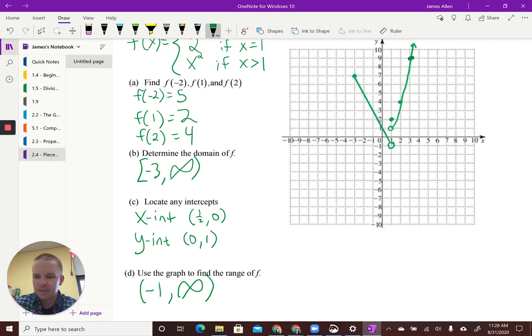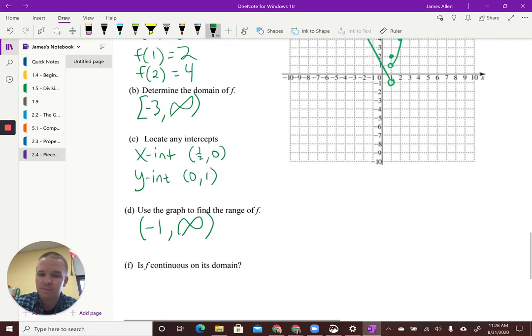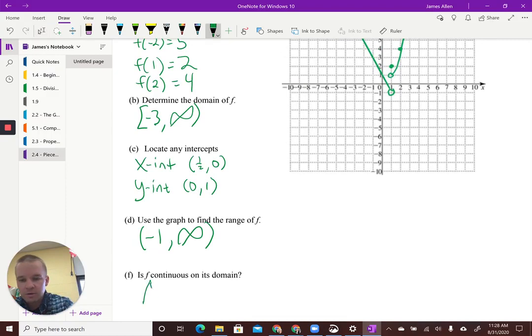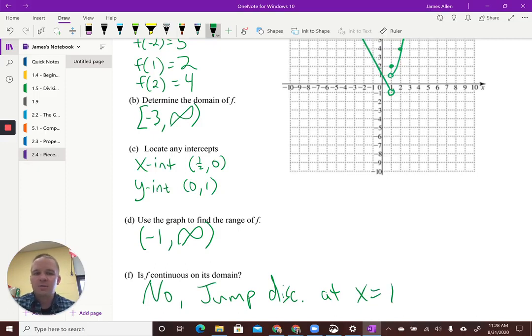The graph really, really helps when we're talking domain and range, in my opinion. Is this continuous? Once again, we have that jump discontinuity at x equals 1. So no jump discontinuity at x equals 1. So it's not continuous on the domain. That is it for this one. I hope you guys enjoyed it. I know I sure did.